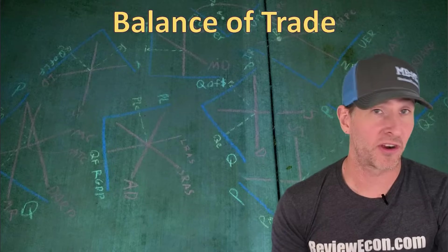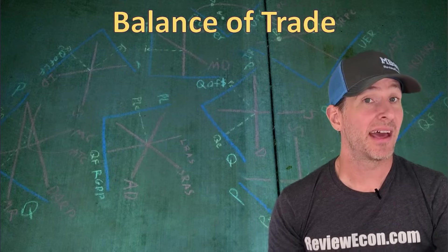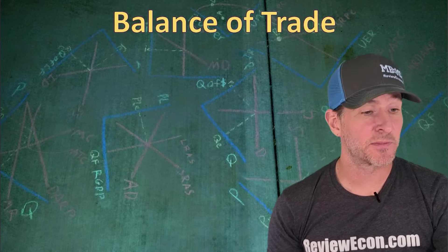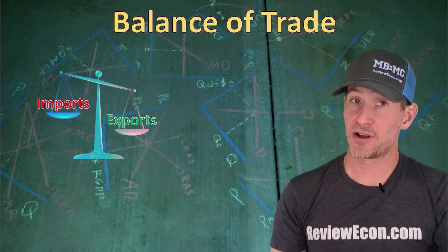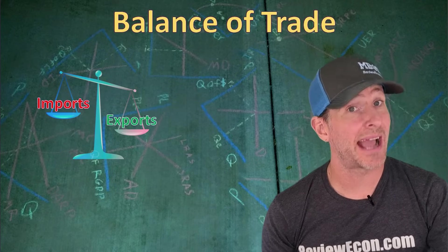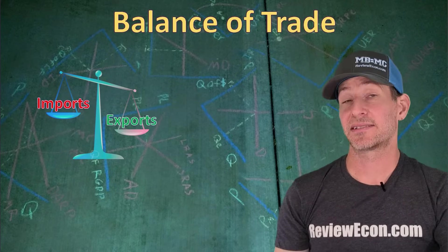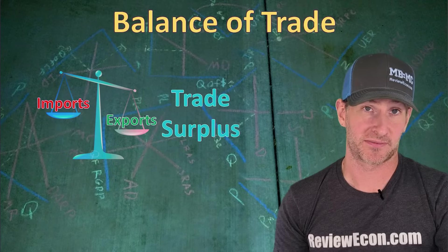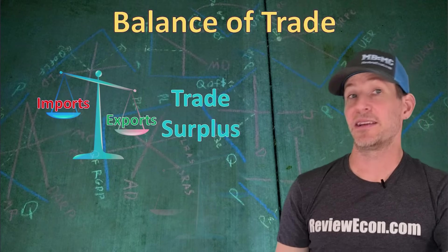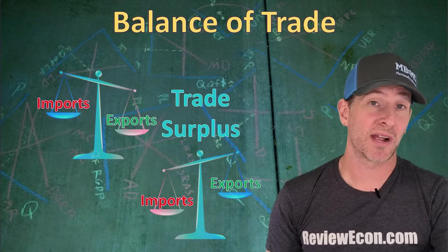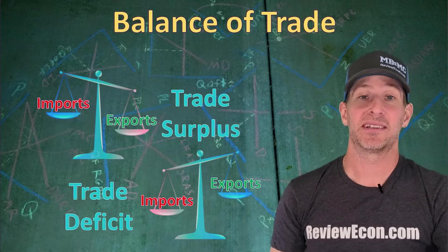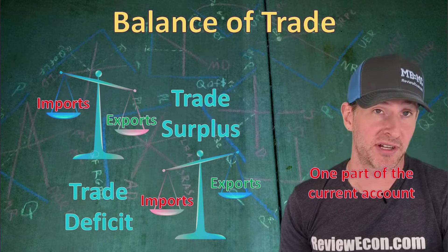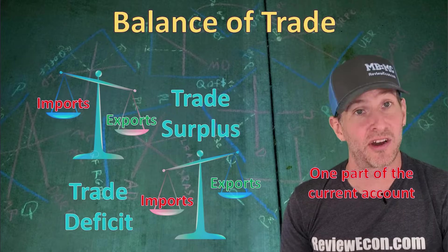Next, we're going to talk about one part of the current account, and that is the balance on trade — that is exports minus imports, which you already know as net exports. When exports are greater than imports, the economy has a trade surplus, meaning positive net exports. But if imports outweigh exports, then we have a trade deficit, meaning negative net exports. Just remember that the balance on trade is one part of the current account, so it is possible for a country to have a trade deficit while not having a deficit in the overall current account.